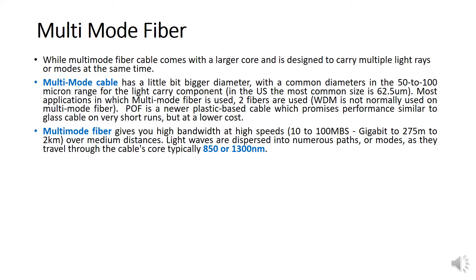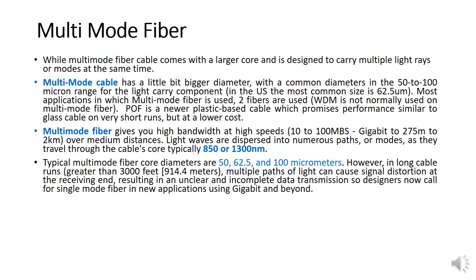As the modes travel through the cable core, the typical wavelengths are 850 or 1300 nanometers — these are your references for multi-mode during testing. Typical multi-mode fiber core diameters are 50, 62.5, and 100 micrometers. However, in long cable runs greater than 3,000 feet, slight dispersion can cause signal distortion at the receiving end, resulting in unclear or incomplete data transmission.